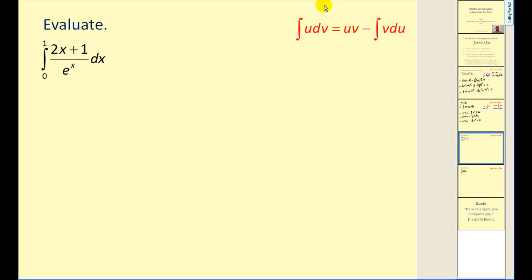Now let's take a look at a couple definite integrals. Here if we let u equal 2x plus 1, du will be rather simple. So let's try that. So differential u will equal 2 dx. So the remaining part will have to be our dv. Since we know we have to integrate, let's rewrite this as e to the power of negative x dx. Again, if I move this up to the numerator, it would change the sign of the exponent on base e.